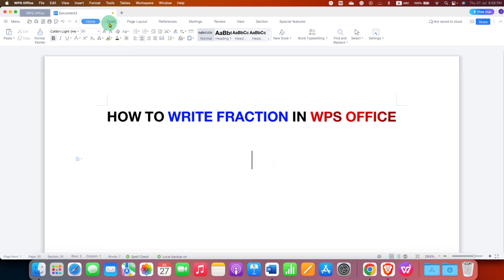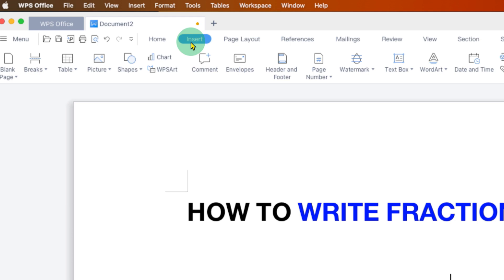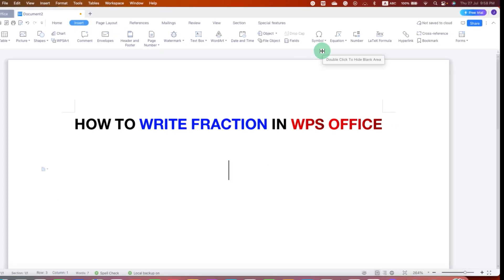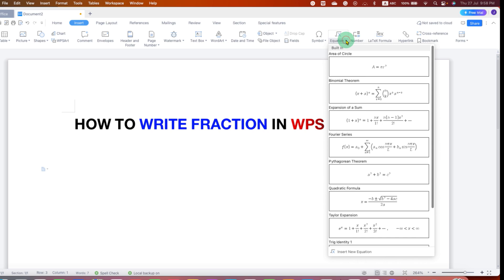Under the Insert tab, you will see the option of Equation at the right side of the page. You need to click on the dropdown here, the small triangle, and then at the bottom click on Insert New Equation.